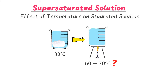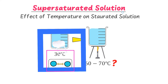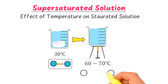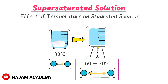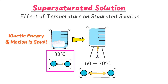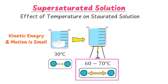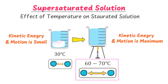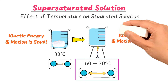If we place this saturated solution on fire and increase its temperature to 60 or 70 degrees centigrade, we observe that the settled sugar at the bottom disappears and dissolves in the water. Why was the extra sugar not dissolving at 30 degrees centigrade but dissolves in the same water at 60 or 70 degrees centigrade? It is because the space between water molecules is small at 30 degrees centigrade, while the space is large at 60–70 degrees centigrade. At 30 degrees, both kinetic energy and motion of water molecules are small, while at 70 degrees both are maximum, so water dissolves more solute.